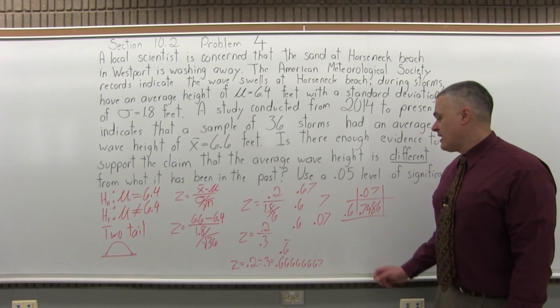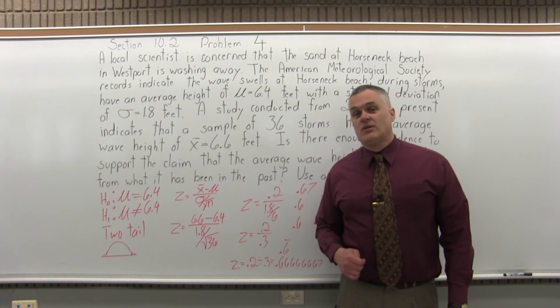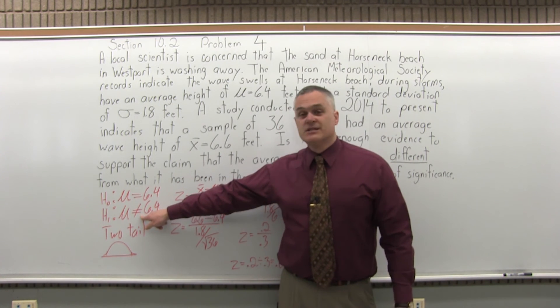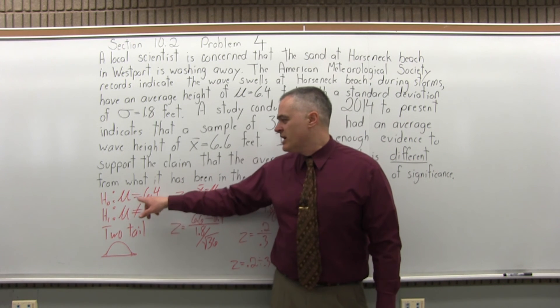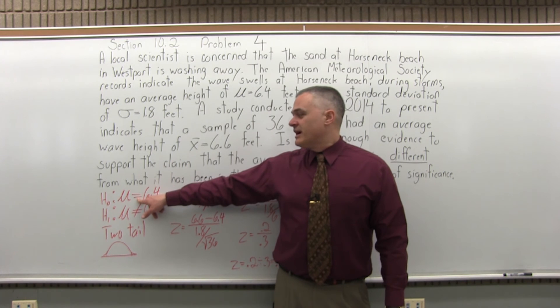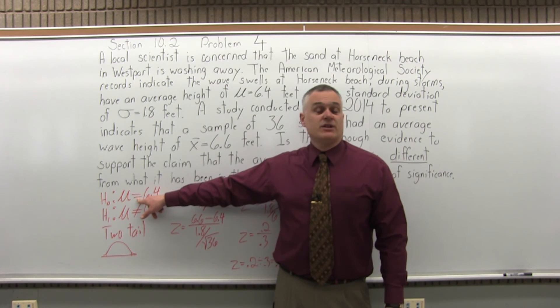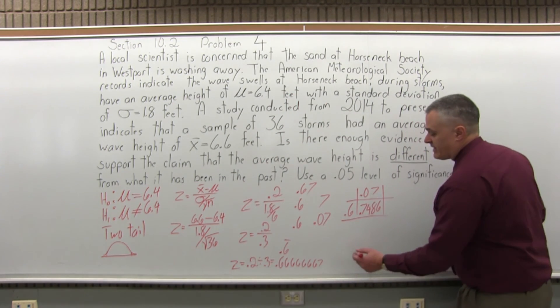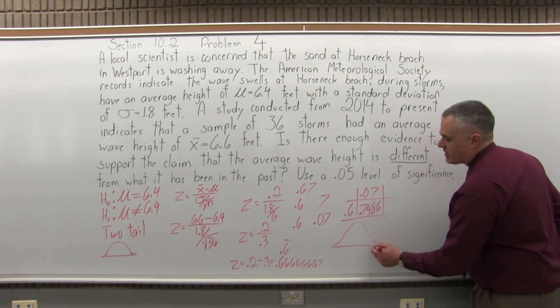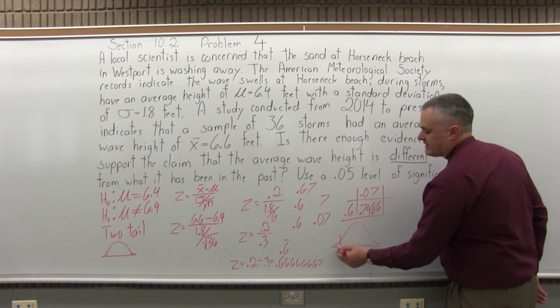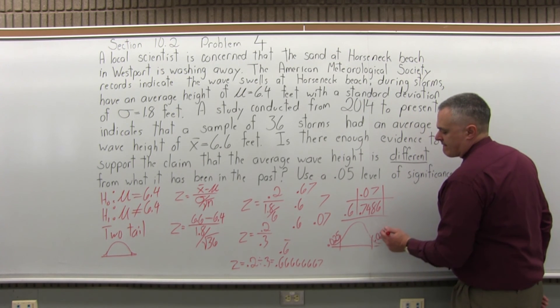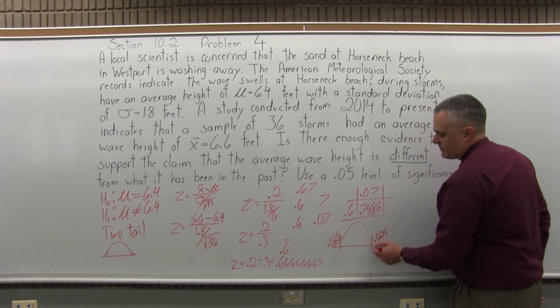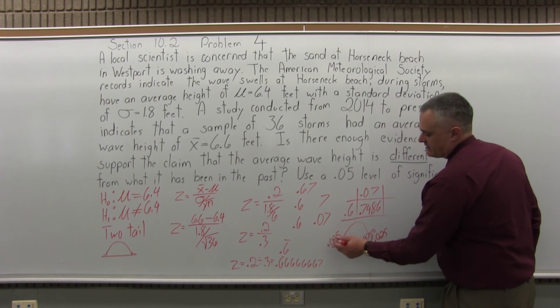So step six, the final step, state your conclusion. Your conclusion will either be worded reject the null or fail to reject the null. If we reject the null, it seems that wave height is likely a little different, that the wave height has changed, indicating some type of climate change, which probably means you are washing away the sand at Horse Neck Beach. If you fail to reject the null, it's more likely that the wave height is still 6.4. Again, you're never positive. It's just what condition is more likely. So this is a two-tail test, so we will have a critical region in the left tail and the right tail. It's a 0.05 level of significance. So you have half of that 0.05, 2.5%, in each tail. And the critical value to get into the right critical end would be 0.9750, and this would be anything bigger than 0.025.